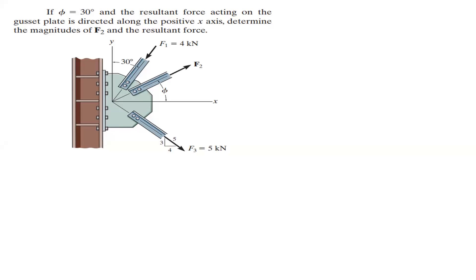We have this question, similar to a previous one, which says: if theta is 30 and the resultant force acting on the cassette plate is directed along the positive x-axis, determine the magnitude of F2 and the resultant force. This is a very simple question.